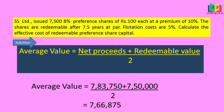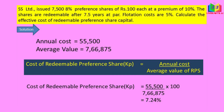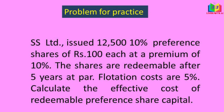We know the annual cost and the average value, so substituting in the formula we get the cost of redeemable preference shares as 7.24%. I hope you now understand this problem. I have given you a small problem for you to practice. Thank you for your patient listening.